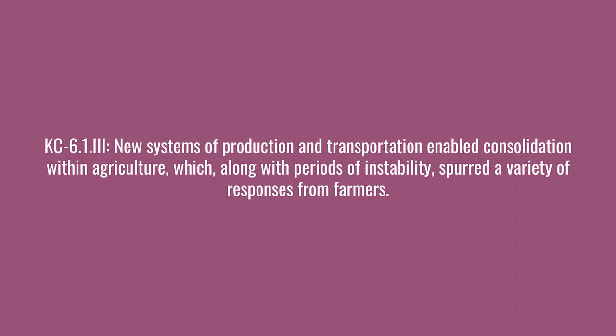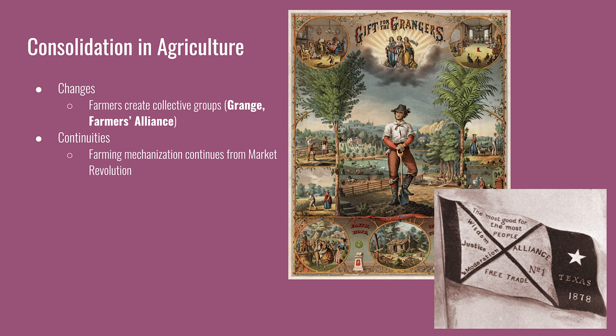The next key concept: new systems of production and transportation enabled consolidation within agriculture, which along with periods of instability spurred a variety of responses from farmers. The main response was the creation of the Grange and the Farmers' Alliance — collective groups that advocated specifically for farmers. They had limited success in passing Granger laws in the West and parts of the South; however, their impact was limited and some laws were ruled unconstitutional by the Supreme Court. For continuities, farming continues the path that started during the market revolution and continues to be more mechanized, leading to higher crop yields, which causes falling prices for crops — ultimately hurting farmers, though it helps consumers.